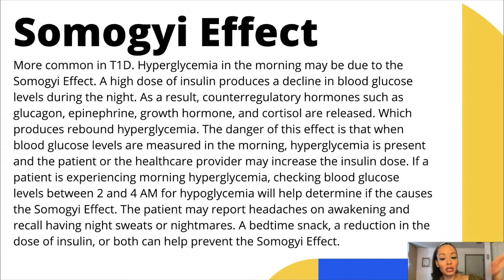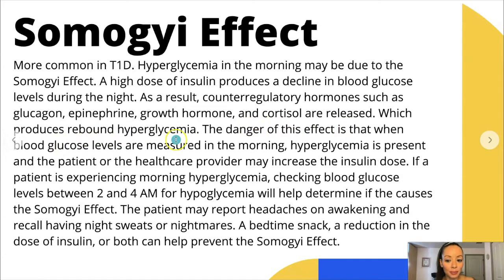Our body does a little bit too good of a job, and all of a sudden it takes off. Counter-regulatory hormones such as glucagon, epinephrine, growth hormone, and cortisol are released, which produces rebound hyperglycemia. The danger is that when blood glucose is measured in the morning, hyperglycemia is present — we saw that 288 on the glucometer — and the patient or provider may increase the insulin dose, which is not the answer because it was actually too much insulin that caused the body to crash and then rebound.